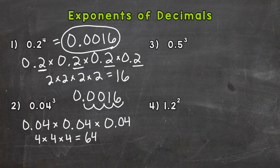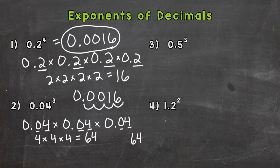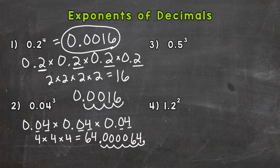Let's rewrite our sixty-four over to the side here and place the decimal in the correct spot. Let's see how many digits are behind or to the right of the decimal in our original problem: one, two, three, four, five, six. So our answer needs six digits behind the decimal. We'll put our decimal at the end of sixty-four and move it in to the left six times. And we fill with zeros — so our answer is four zeros and then a sixty-four, giving us 0.000064.